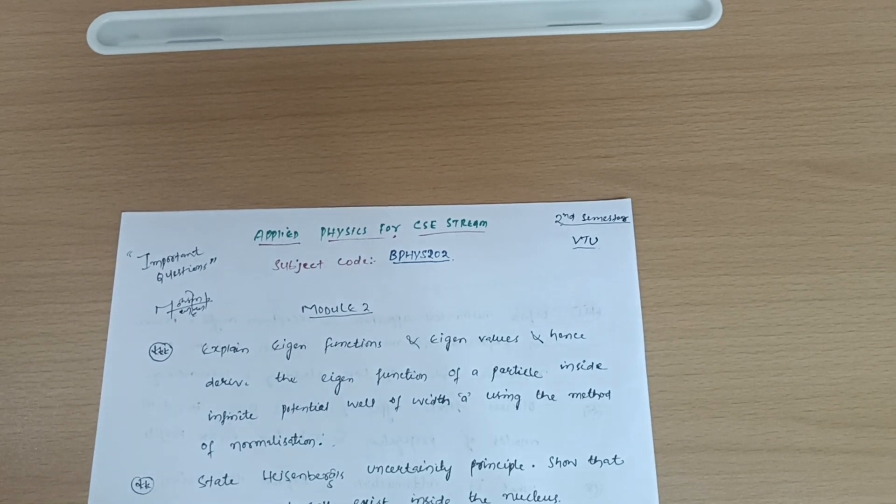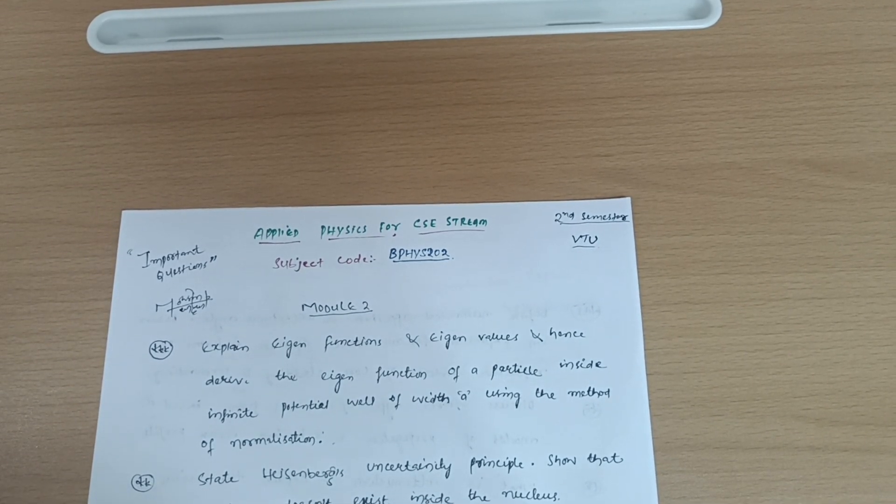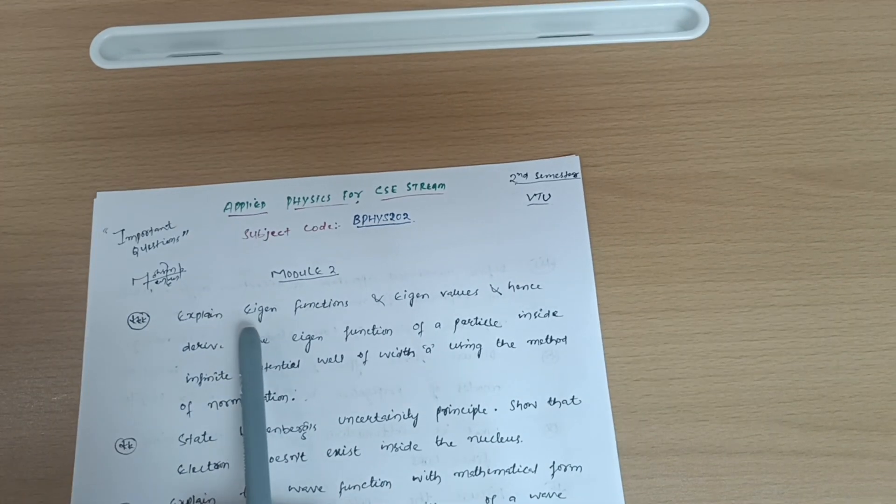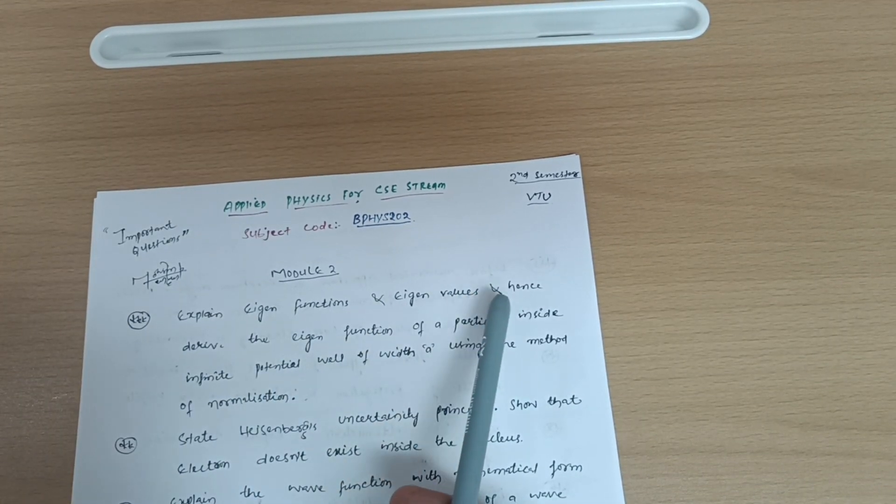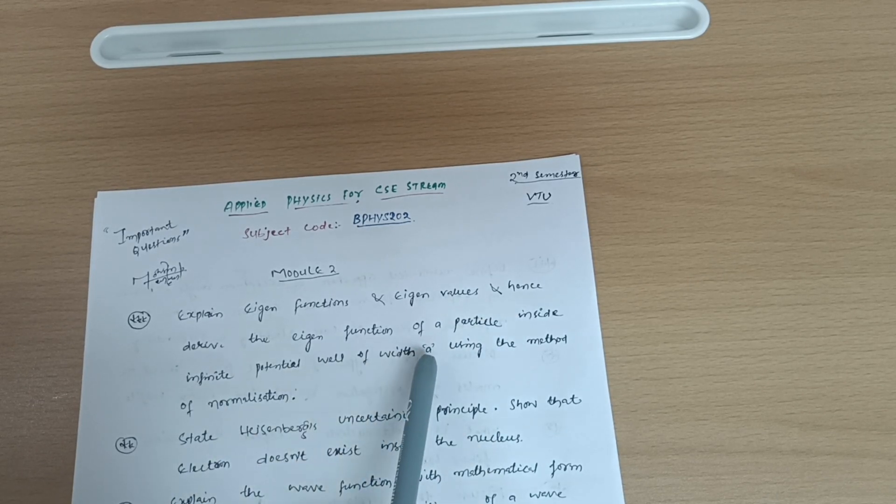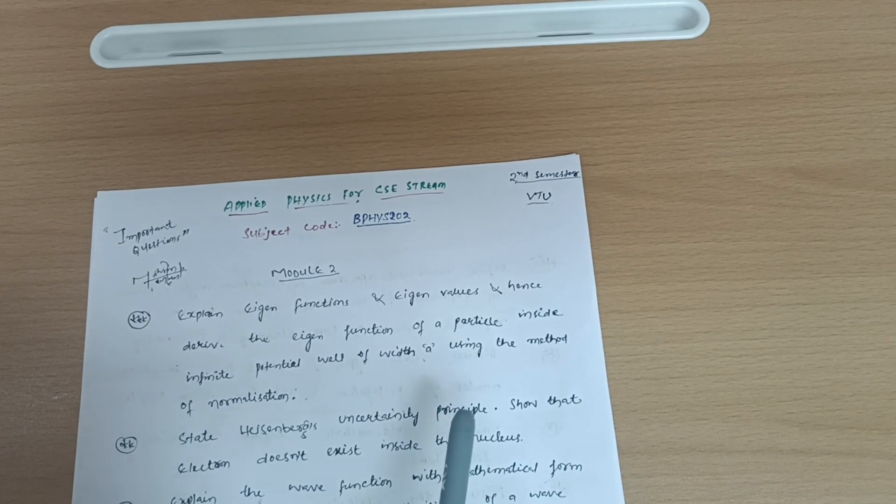Let us start with the basic passing module, which is module second. You have to cover some important questions, like super important questions: Explain eigenfunctions and eigenvalues and hence derive the eigenfunction of a particle inside infinite potential well using the method of normalization. This may be an eight marks question, most important one.